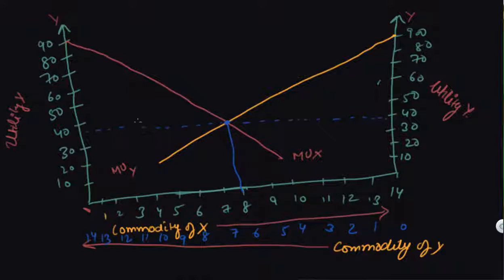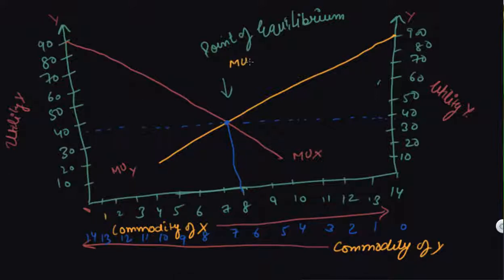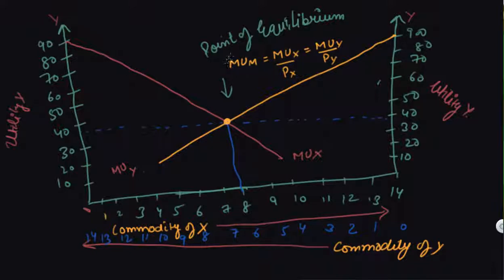On the graph, this is the point of equilibrium we have got. This is the point where MU_M — which is the horizontal line — equals marginal utility of X and also equals marginal utility of Y. Since the price is the same for both commodities, we can read directly from the graph. We get 8 units of X and 6 units of Y. Note: do not relate this graph to the answer from the previous numerical question, as they are different examples.